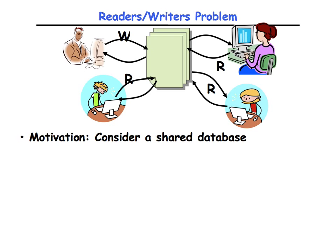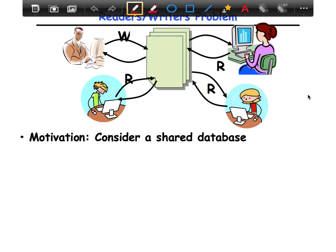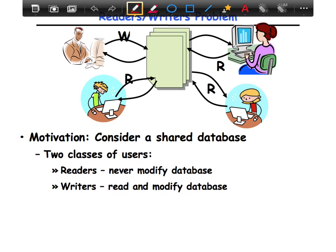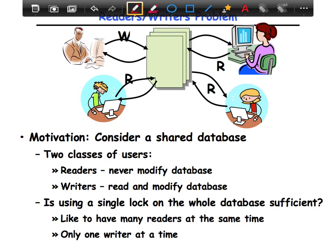Let's consider the shared database. There are two classes of users. We have readers who never modify the database, and writers that read and modify the database. The reader-writer observation is simply that when you have multiple readers accessing the data structure at the same time, they do not interfere with each other because they're just reading the database.